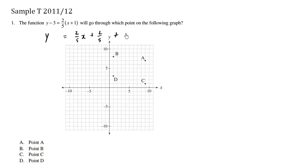Now 3 here is going to be the same thing as 15 over 5. So if I rewrite this, we have y equals 2 fifths x plus, I'm going to add these numerators, 17 over 5.